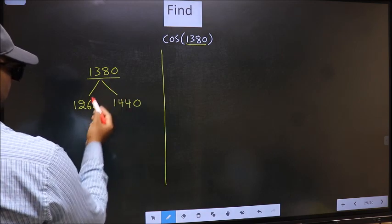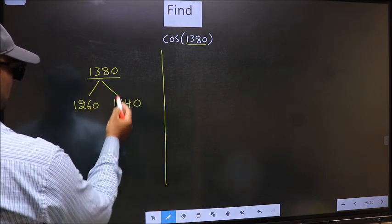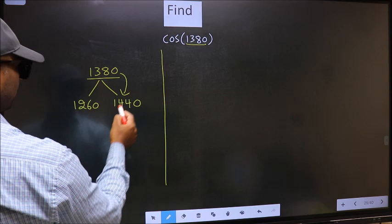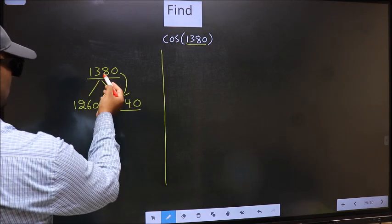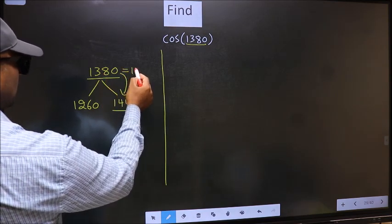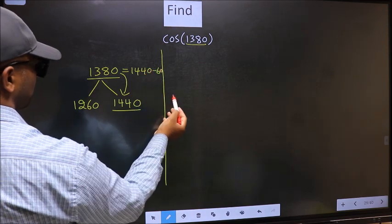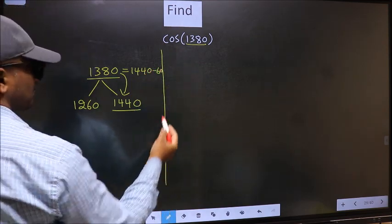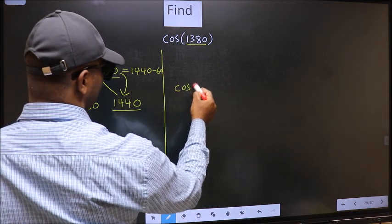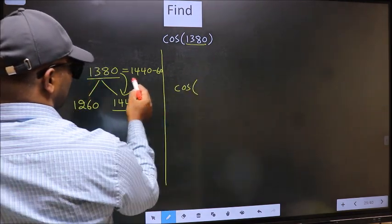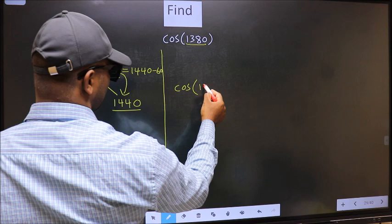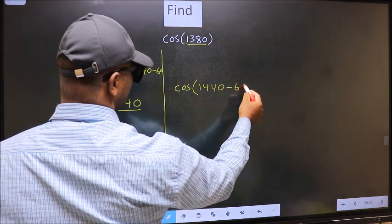Next, 1380 is close to which number? This is close to 1440. So in place of this, now we should write 1440 - 60. So this will become cos(1440 - 60).